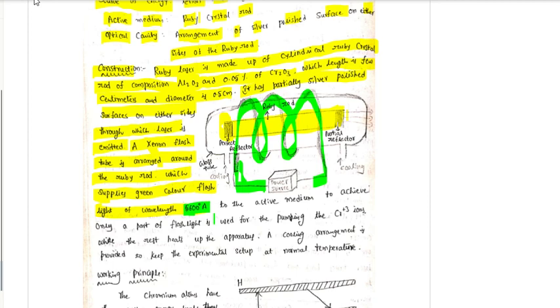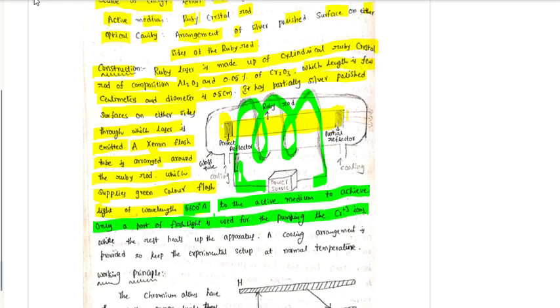This process is called optical pumping. Light energy is used to excite the atoms in the active medium. Only a part of the flashlight is used for the pumping of chromium Cr³⁺ ions, while the rest heats up the apparatus.